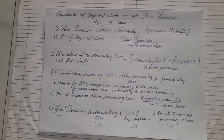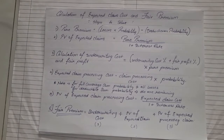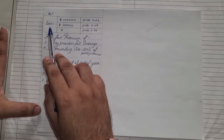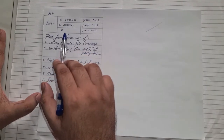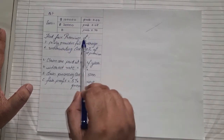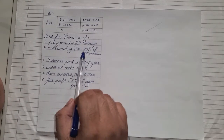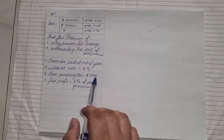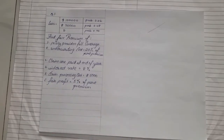These are the six steps to solve this topic — any sum can be solved with these steps. Now we start with the first problem to find the fair premium. The question gives losses of $100,000, $20,000, and $0 with some probabilities. Find the fair premium if the policy provides full coverage. Underwriting cost is 20% of pure premium, claims are paid at end of year, interest rate is 8%, claim processing cost is $5,000, and fair profit is 5% of pure premium.